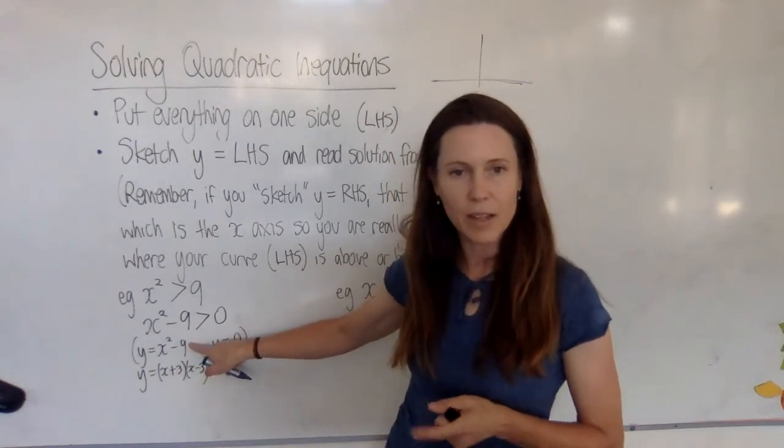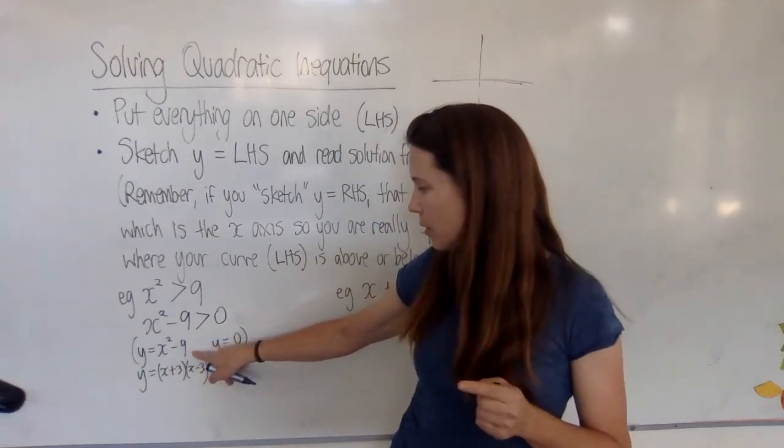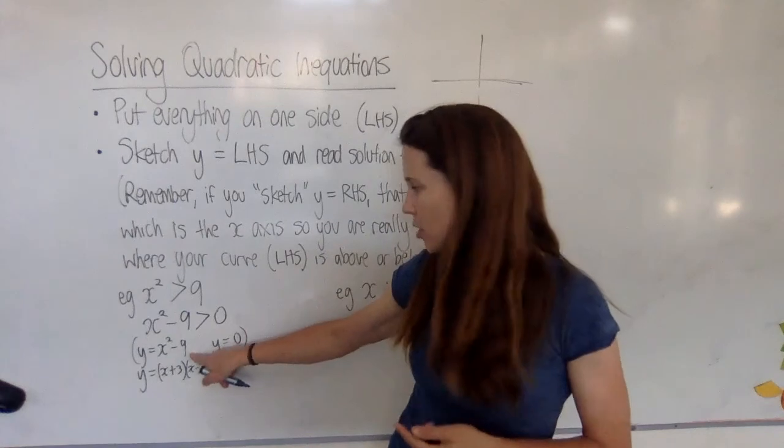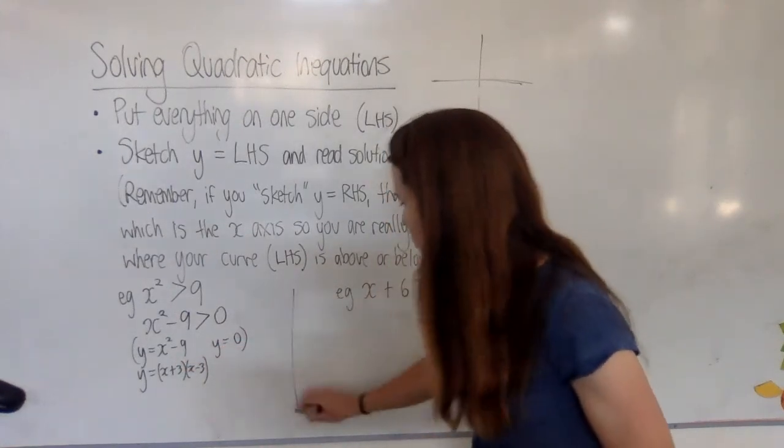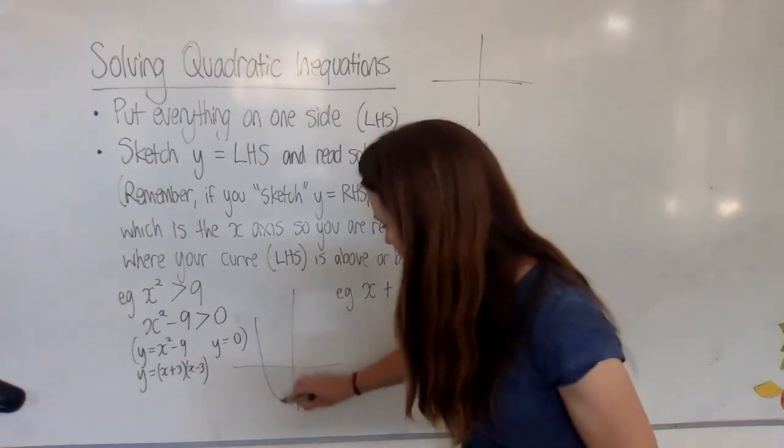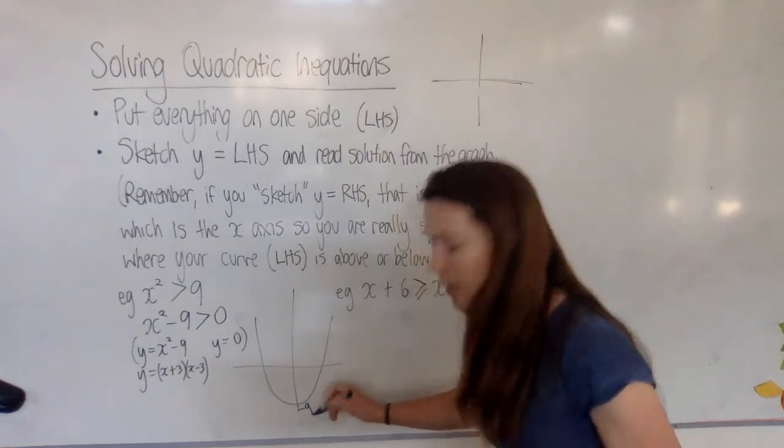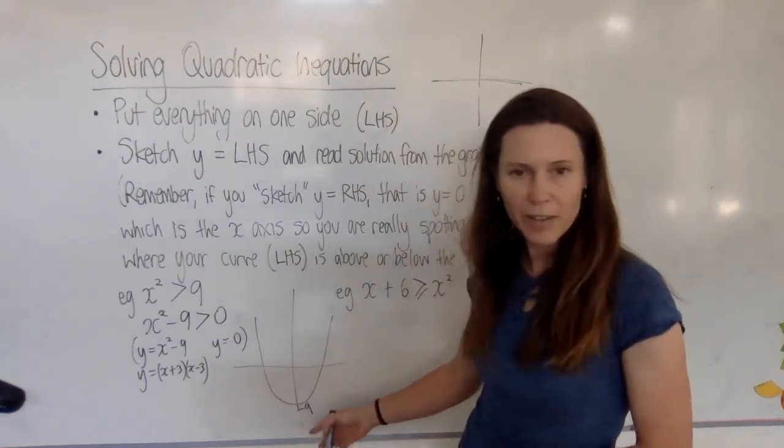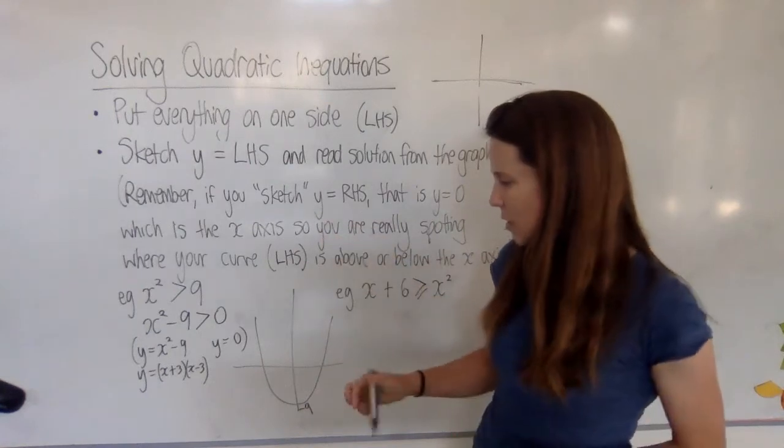Now by having that in both forms, I've got two bits of information. When I look at it like this, I can think that's a parabola y equals x² that's just been moved down 9, and that helps me draw it really quickly and easily like this and know that it's going minus 9.